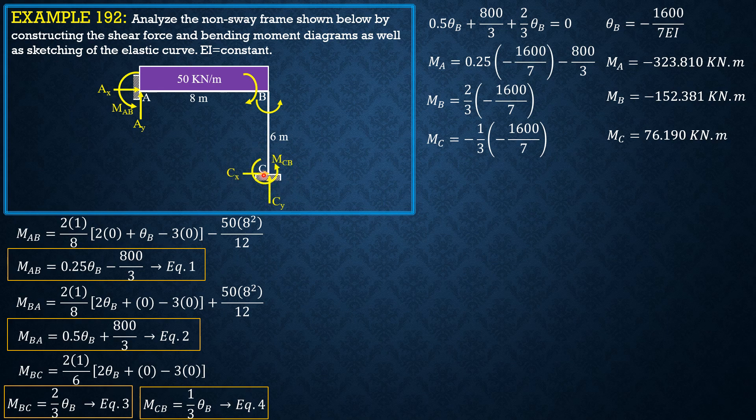MBC is MB negative, so it is counterclockwise in the figure. Then for reactions at C, we anticipate MCB would be negative or counterclockwise since MC is positive, so it's also counterclockwise here. We follow the values.